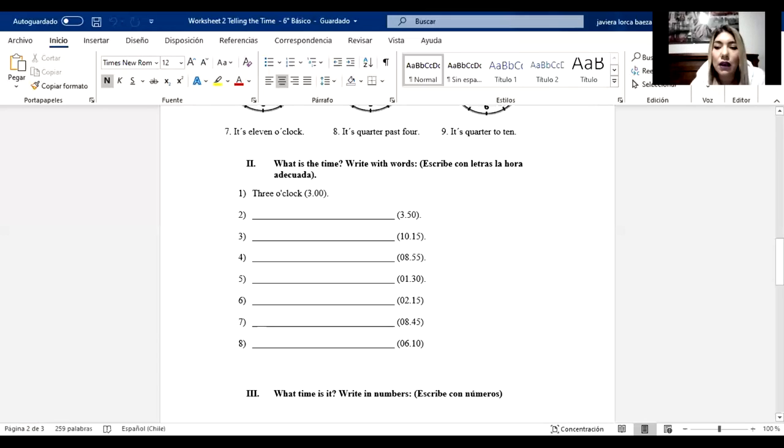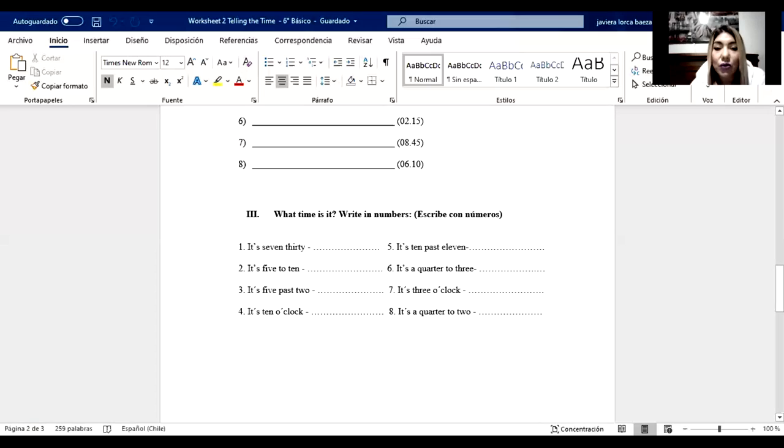Number three. What time is it? Write in numbers. This is the opposite. We have eight different times written by words. You have to read this time and write using numbers. And here, you can see five to ten, ten past eleven, a quarter to three, a quarter to two. This is analog clock to.